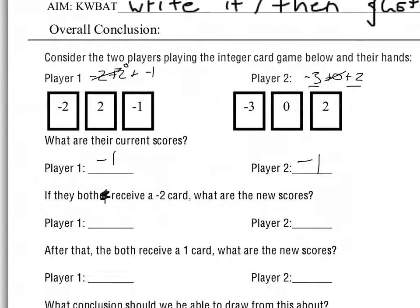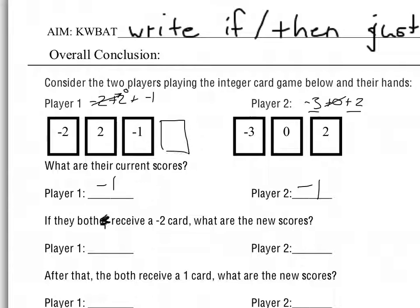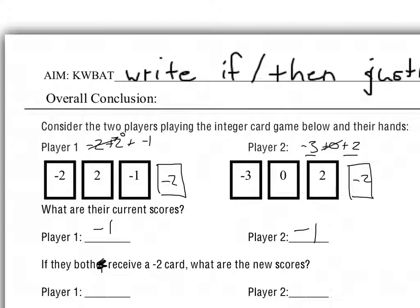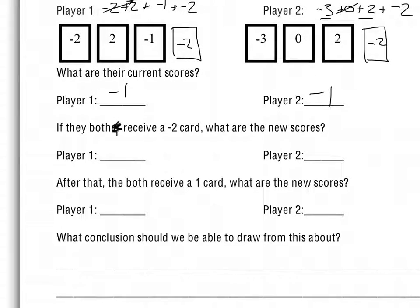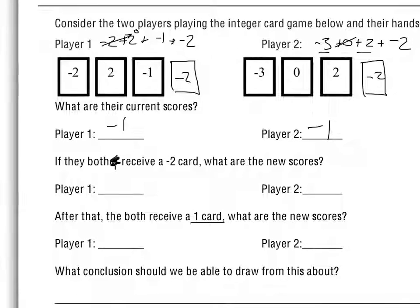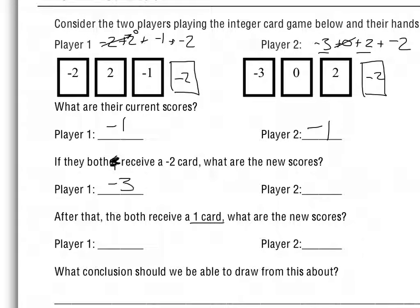If both players receive a negative 2 card — the same thing is happening to both players — go ahead and add a negative 2 to their hand. We're adding a negative 2 to both expressions. After that, they both receive a 1 card. Go ahead and add that to their set and tell me what that value will be. Pause the video until you've done that.